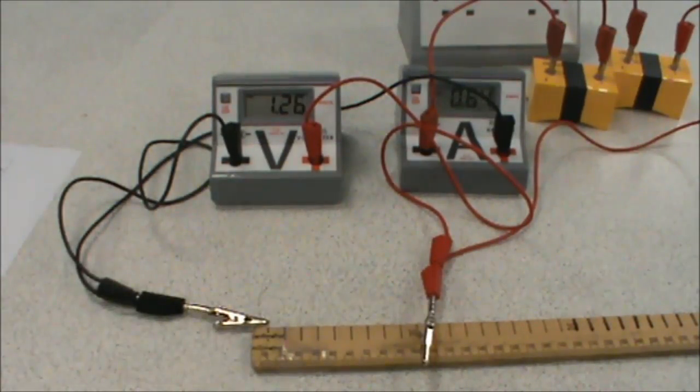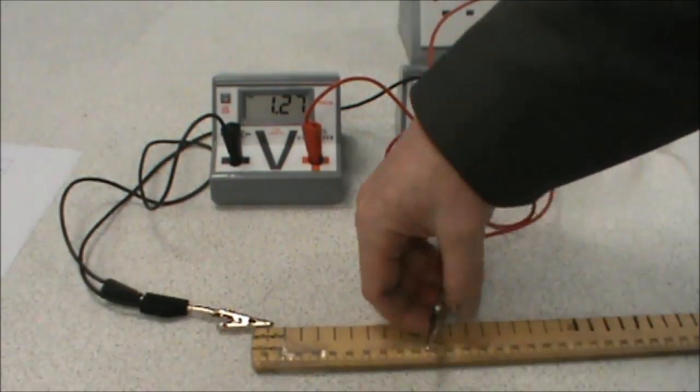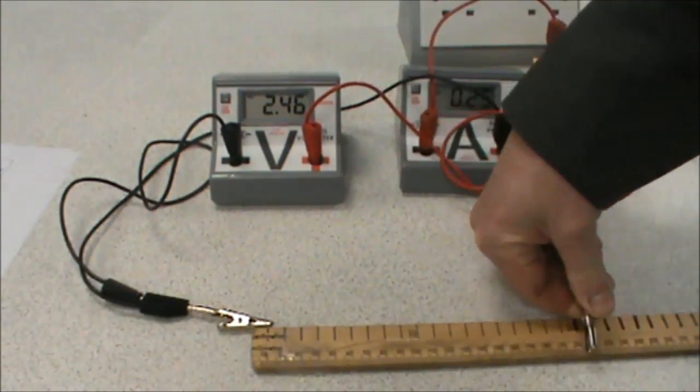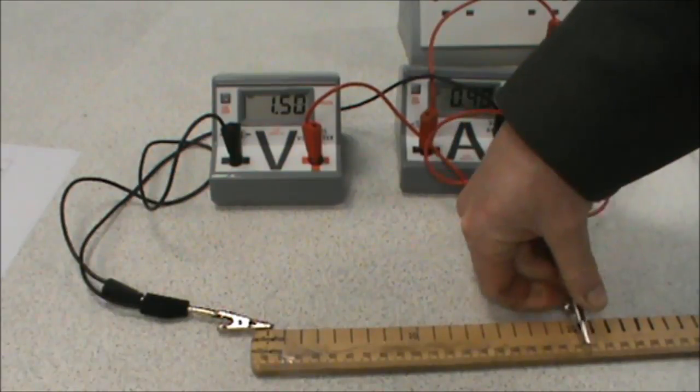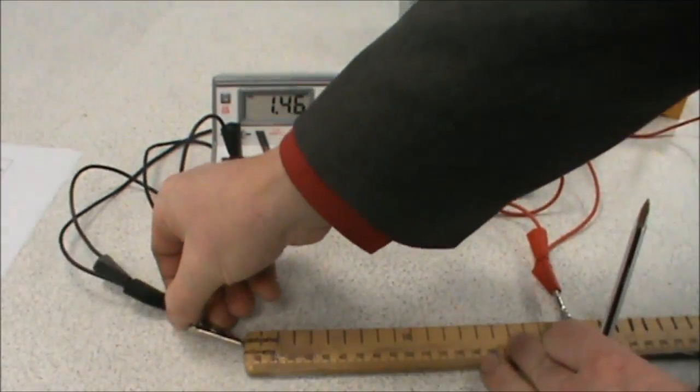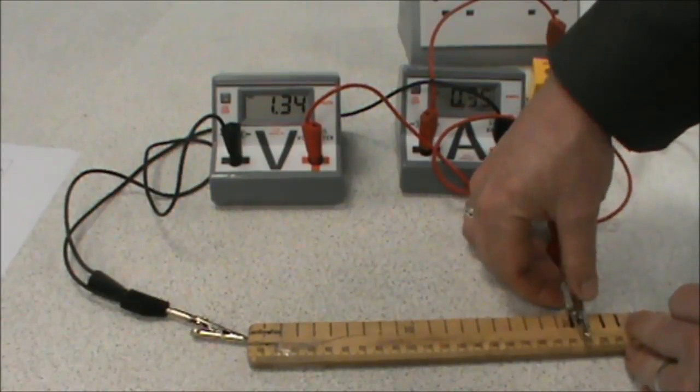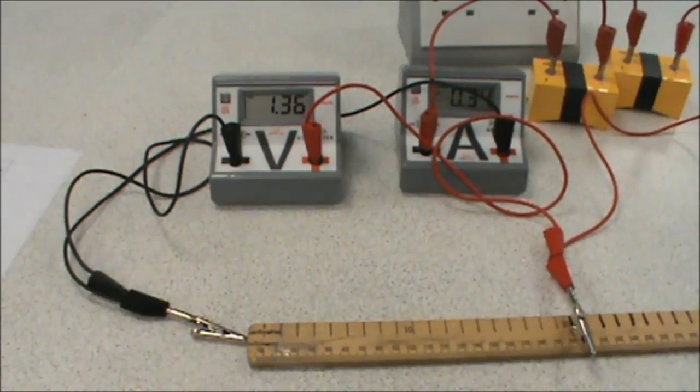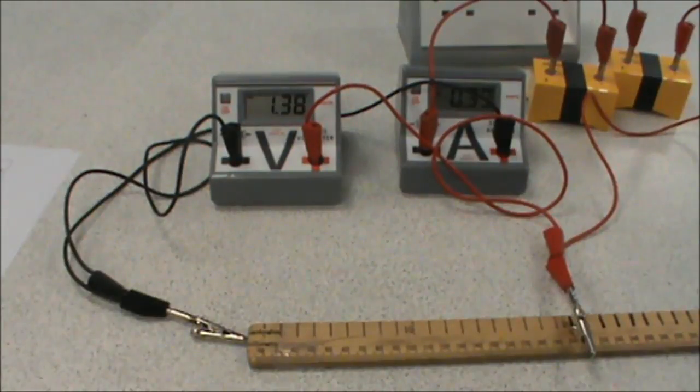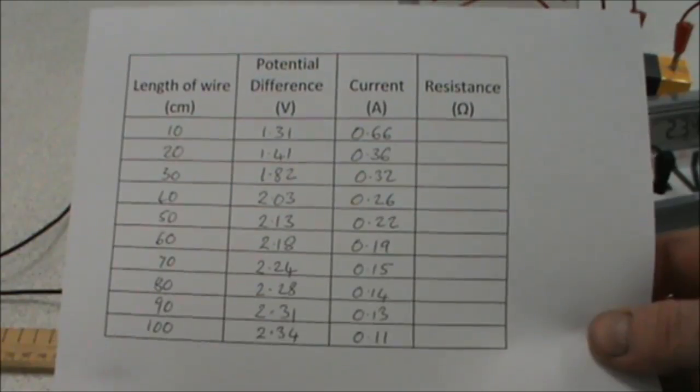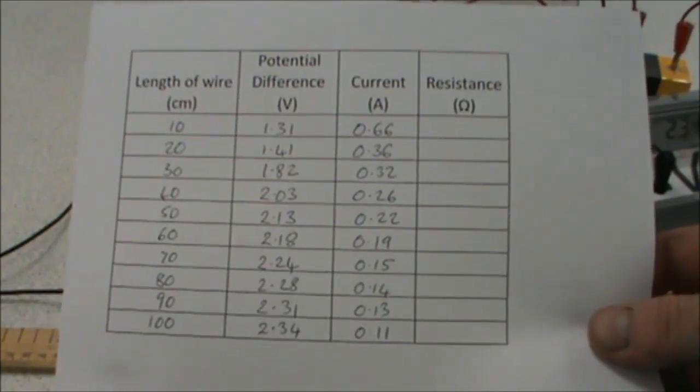We then move the crocodile clip along to 20 centimeters, making sure that we've got a good connection. And we record the voltage and current again, and we repeat until we get to 1 meter. And there we have a completed results table.